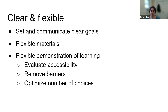In looking for flexibility, you also want to make sure you're including as much accessibility as possible — evaluating materials for accessibility to remove any potential barriers — and also optimize the number of choices. In giving students choice and flexibility in how they demonstrate their learning, sometimes we might create so many choices that students are overwhelmed by all the decision-making. Or maybe there's a traditional assessment with very detailed instructions, and the alternative assessment just gives students the option to come up with their own project, which can be very overwhelming and harder for students to actually make use of that opportunity.